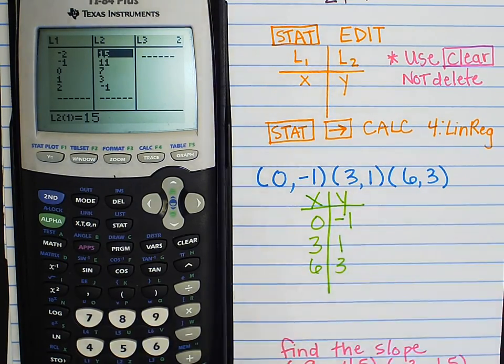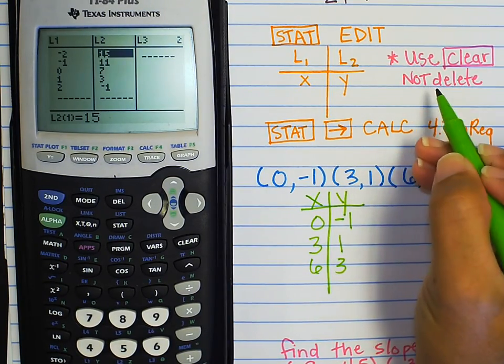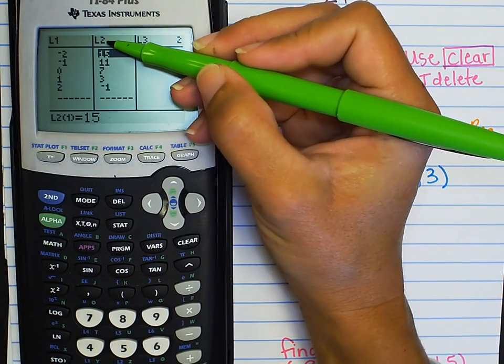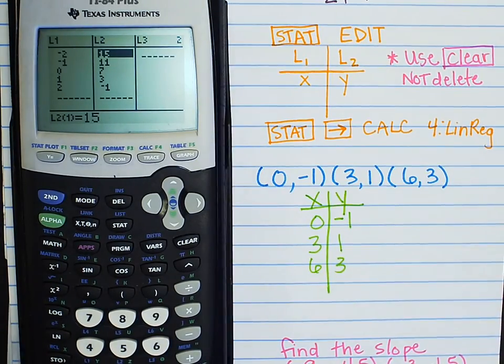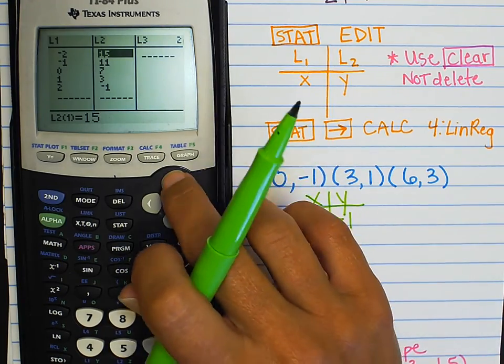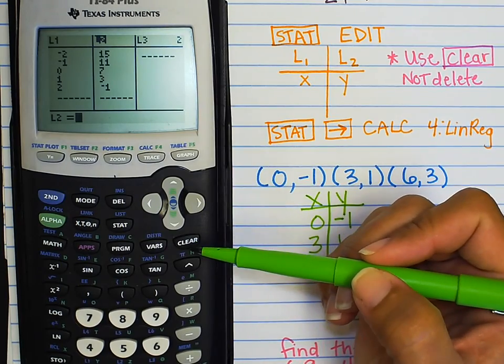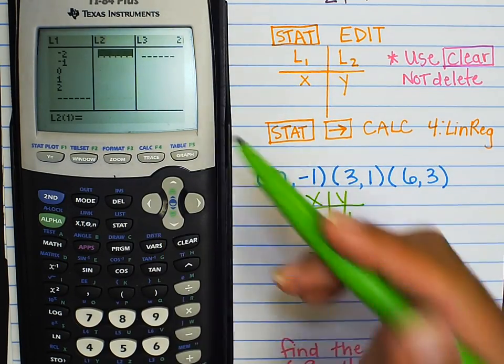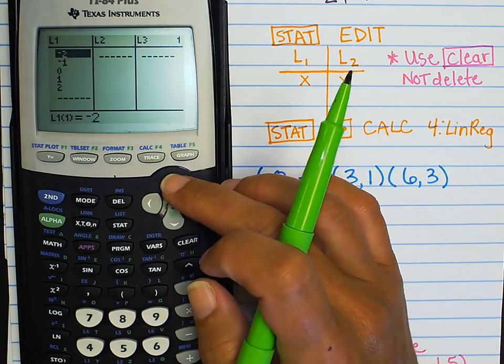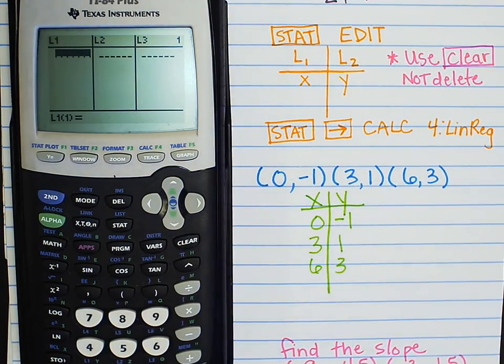I need these cleared out. Please notice this note. Do not hit delete. If you go up and you hit delete, it deletes the whole column. And the calculator is not programmed for Ys or Xs to be in a different column than L1 and L2 for our purposes. So, go up so that L2 is highlighted. Hit clear. It's right by the arrows. Clear. And then when you push down, all those numbers will go away. Same thing. L1, up, clear, down, and your table is ready.